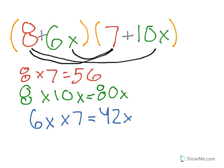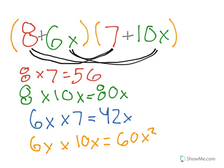And then finally, you'd be multiplying the last two variables, which would be 6x times 10x. And that equals 60x squared.